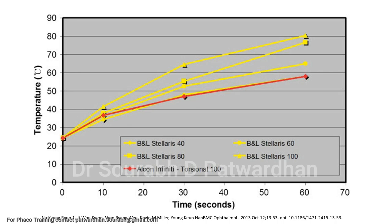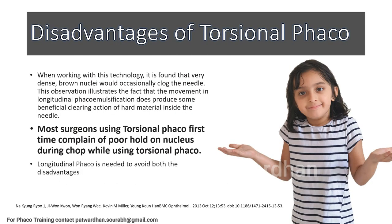But what are the disadvantages of torsional FACO? One major disadvantage is that in harder grades of cataract, it may clog the needle. Unlike longitudinal FACO emulsification, which produces a clearing action of hard material, torsional cannot do that. Also, most surgeons using torsional FACO for the first time complain of poor hold on the nucleus during the chop.